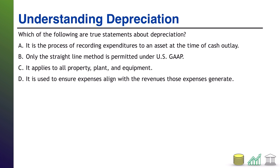B: only the straight-line method is permitted under US GAAP. That is also not true, because under US GAAP you do have alternate methods — you can use various accelerated methods beyond just the straight-line method. C: it applies to all property, plant, and equipment. This is the trick answer right here, because it is also not true even though it appears it should be. Depreciation does apply to almost all property, plant, and equipment, but it does not apply to land. And land is part of your property, plant, and equipment. Therefore, this cannot be a correct answer.